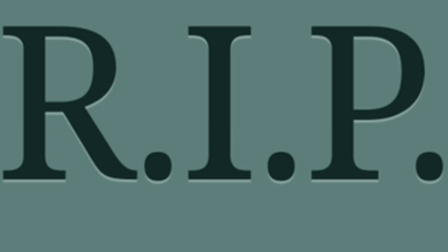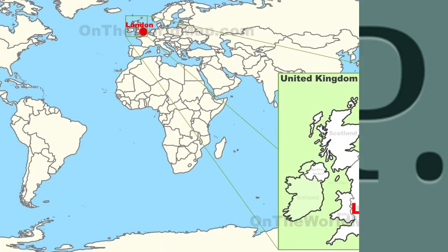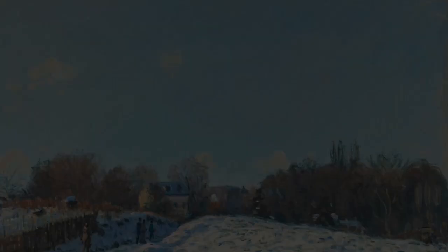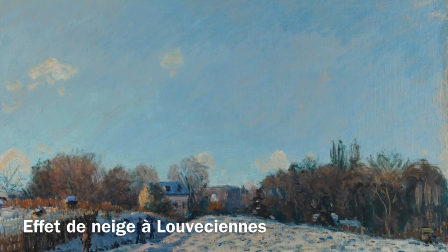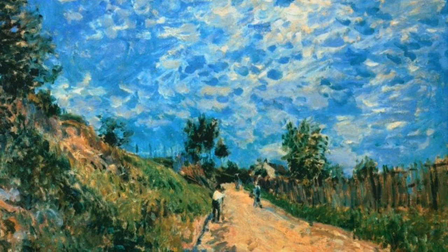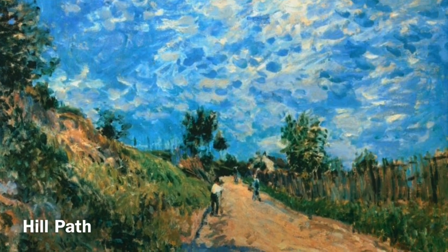When Alfred was 18 years old, he was sent to London so he could study business. But three years later, he returned to Paris so he could study art and painting. Alfred loved to make art that was focused on outdoors and the beauty of nature.